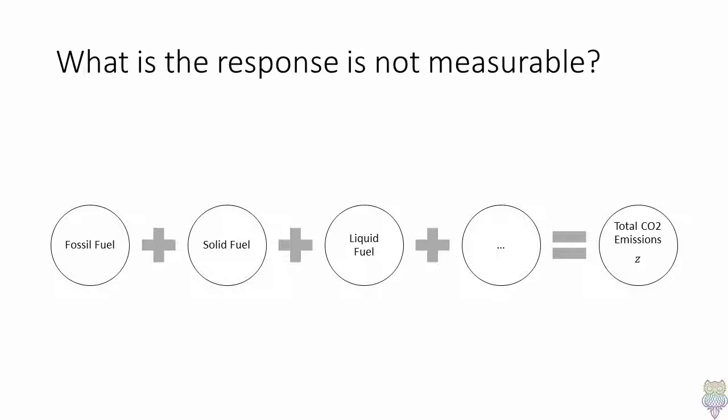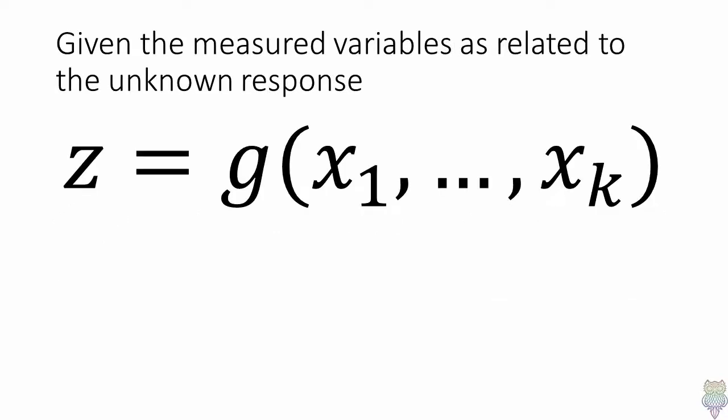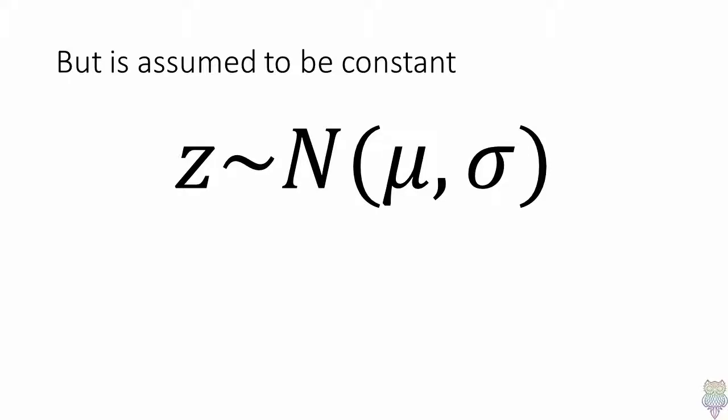So if there is not a response and you have codependent relationships among measured variables, then it can be balanced by the constant. That is, if we have measured variables and we have an unknown response variable, then what we can assume is that this constant is normally distributed with a known mean and standard deviation, a common assumption among variables.